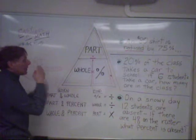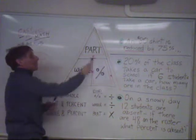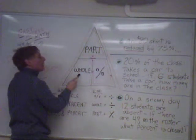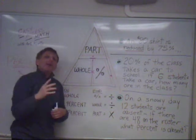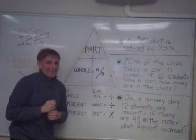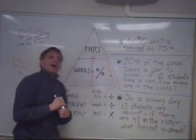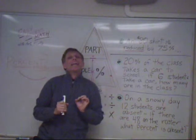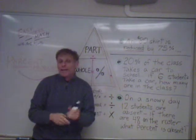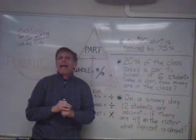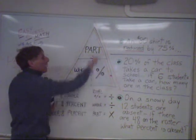You will be given two out of three elements needed in a percent problem: there's the part, the whole, and the percent — the percentage that you're using. In a percent problem you'll always be given two pieces of that information, and you'll need to figure out the third. Percent problems are often presented in word problems, so you have to identify which two elements you have and then proceed to figure out the third. You can use this triangle to help you.